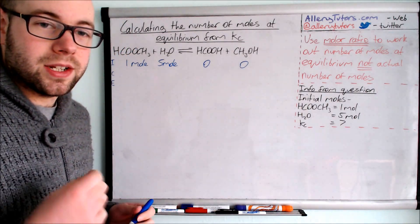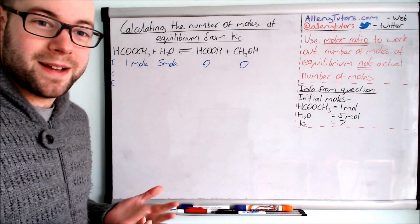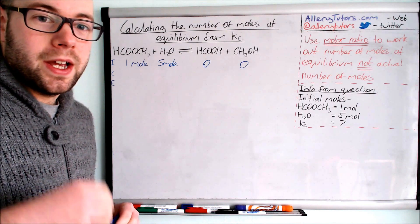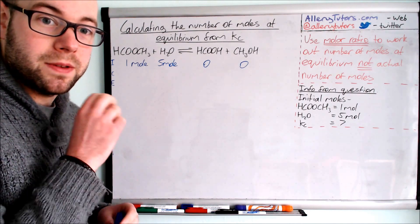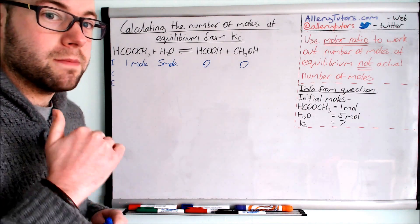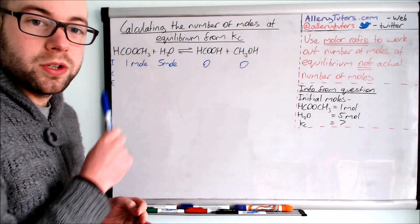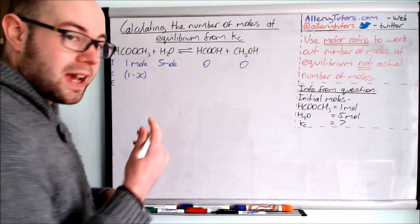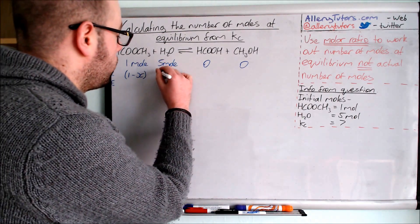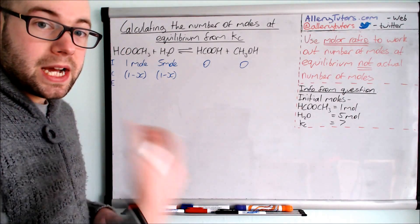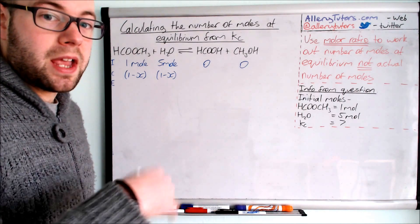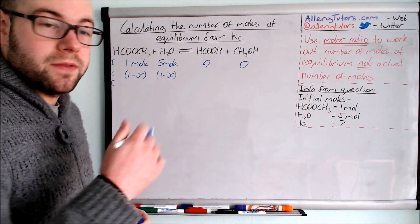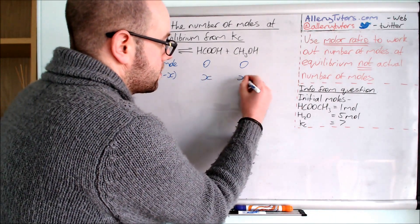Now we need to work out the change. We haven't been given much data, so we use algebra here. We use the molar ratio for this because the change is only worked out using the molar ratio. The molar ratio is all one-to-one. So we say the change for the ester is minus x and for water is also minus x, where x is the unknown value. On the products side, since we have a one-to-one ratio, both the carboxylic acid and alcohol will increase by x.